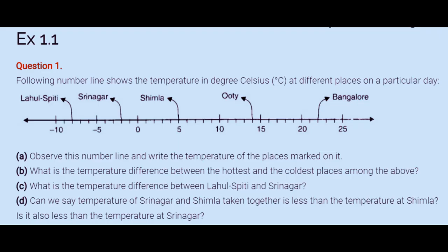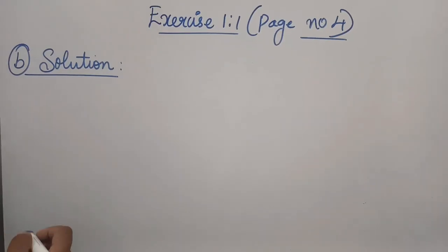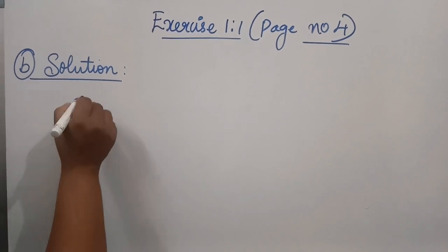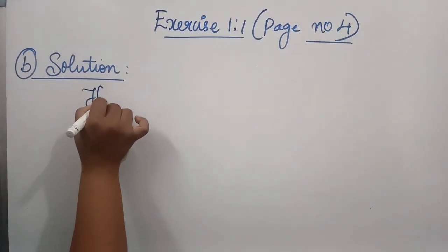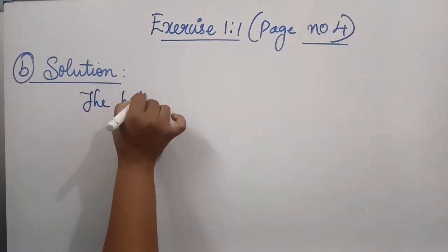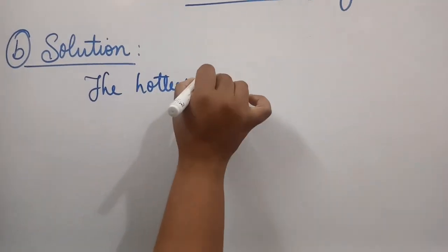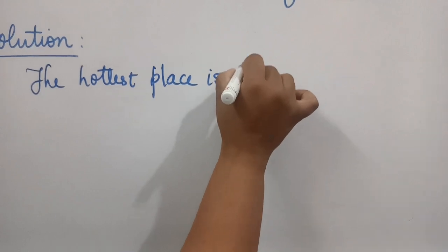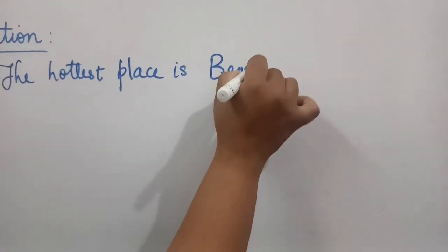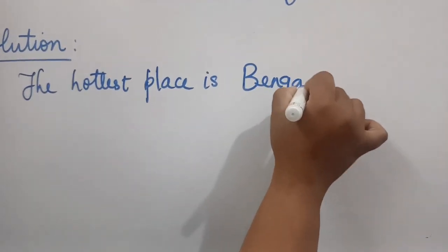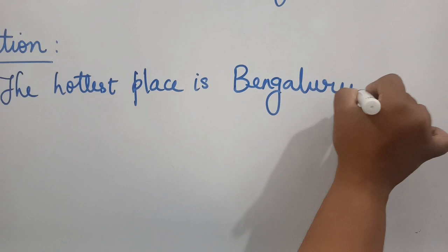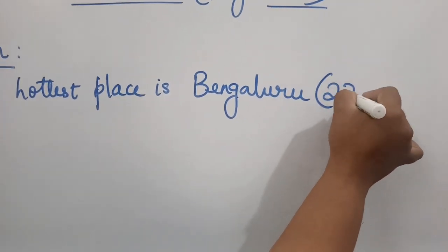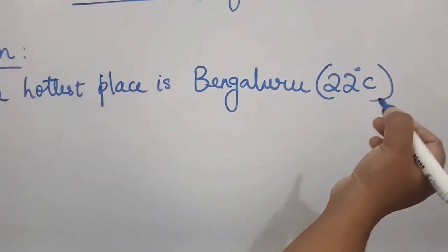Question B: what is the temperature difference between the hottest and the coldest places among the above? Let's see the hottest place according to the number line. The hottest place is Bengaluru, and what is the temperature? 22 degrees Celsius according to the number line.